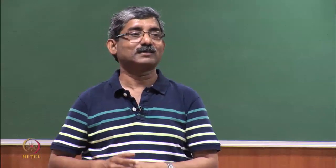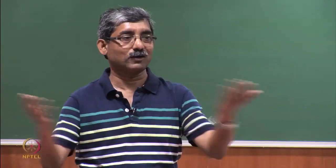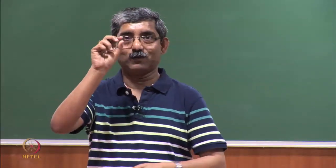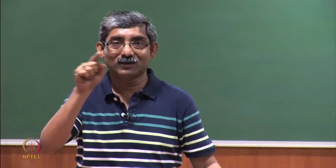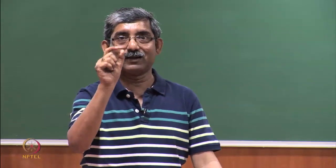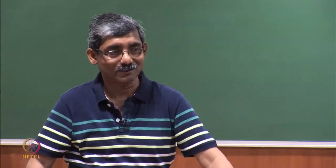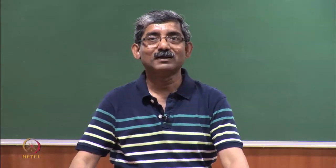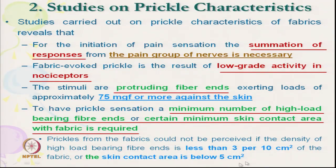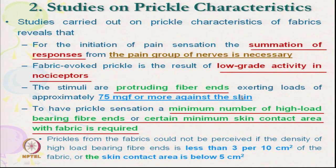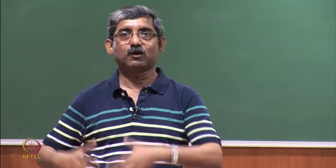The minimum contact area of the skin has to be 5 centimetres square; below 5 centimetres square you will not get prickle sensation. Even with a prickly fibre surface on a 1 centimetre patch, you will not get prickle sensation. So there are three conditions: the fibre has to have minimum load-bearing capacity, a minimum number of fibres per unit area, and a minimum contact area.